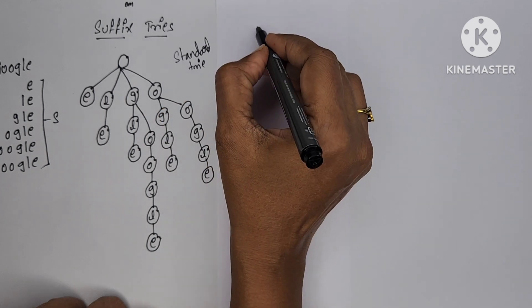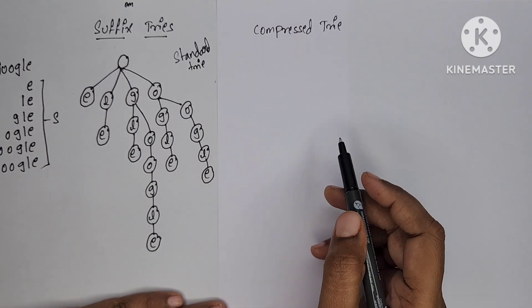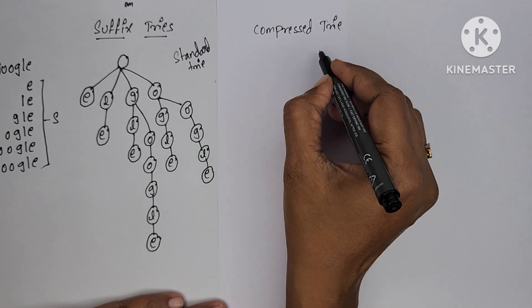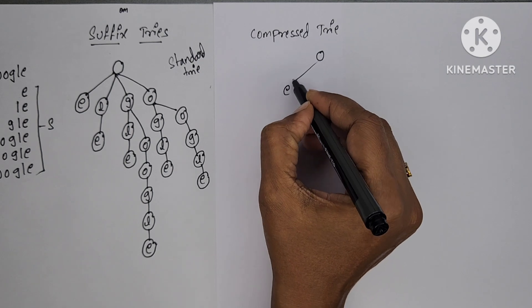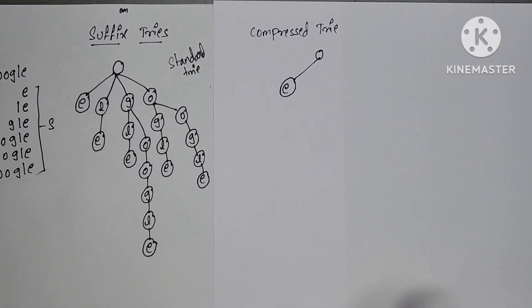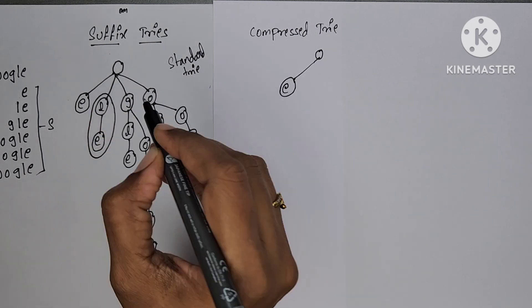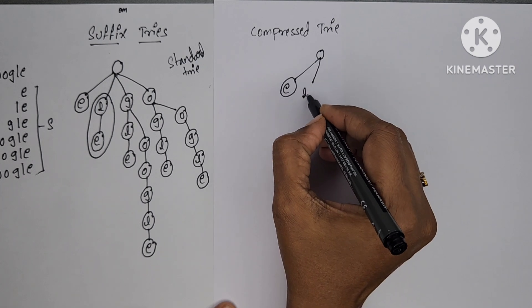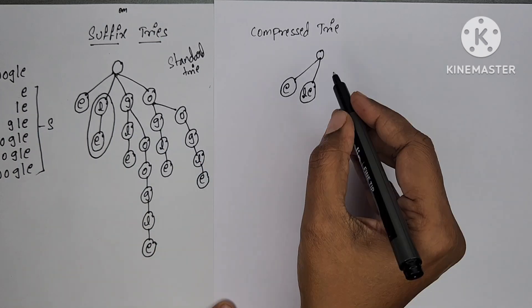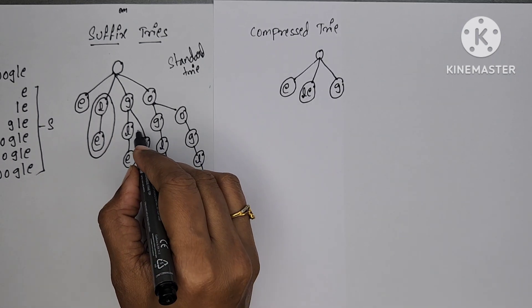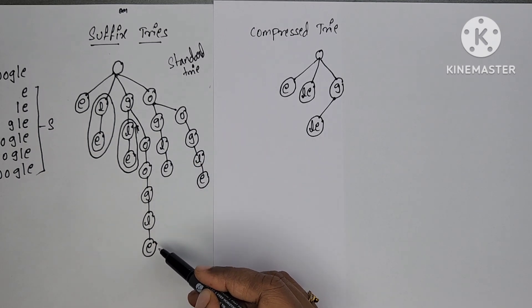Next, I am going to construct a compressed trie. In compressed trie, we can reduce the number of levels, so that we can easily search a given string. Again, in compressed trie also, root is empty. Next, E — there is only one character, so we cannot compress it with other characters. From L to E, there is only one path from node to leaf node, so we can combine these two nodes — L and E. From G to E, there are two paths to traverse to leaf nodes, so you cannot combine with another node. But L to leaf node, there is only one path — we can combine L and E.